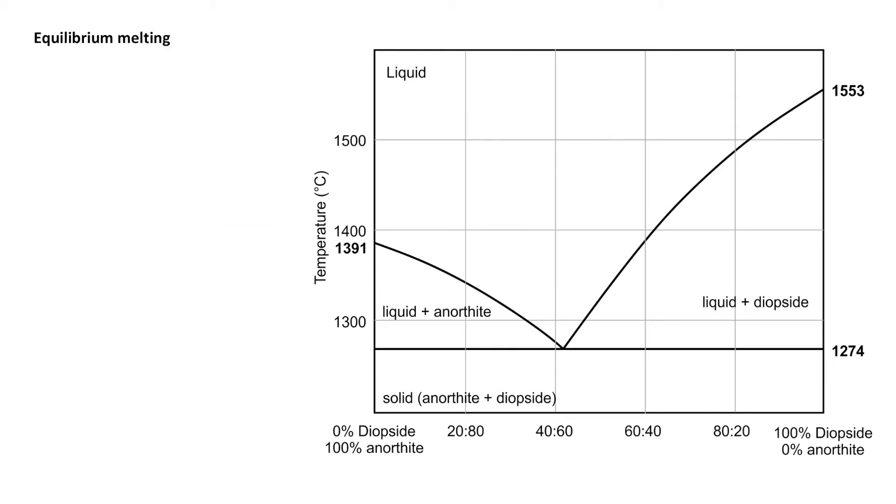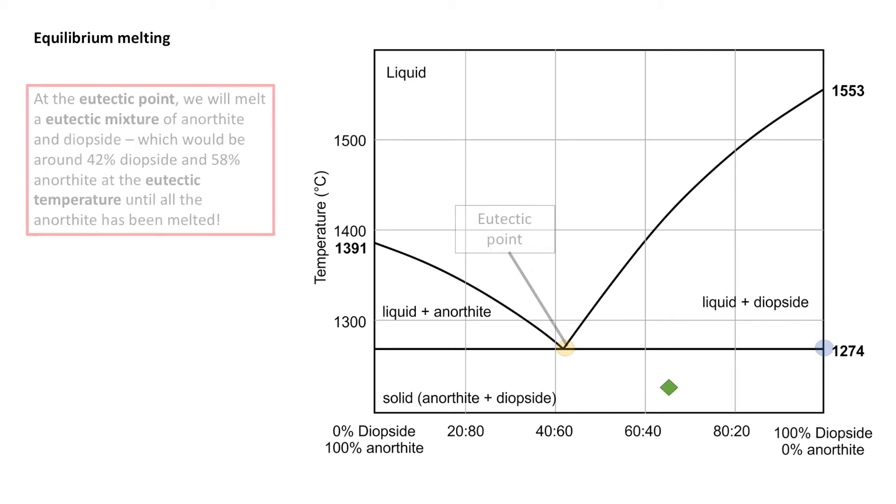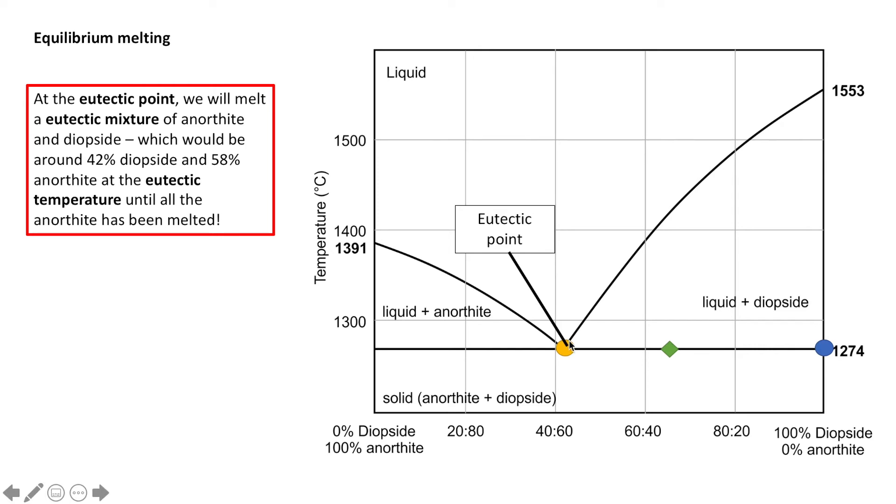During equilibrium melting, it's essentially the exact same in reverse, but it's easier to demonstrate visually. So say we have a rock of sort of this composition. We're going to heat it until it hits the solidus. And when it hits the solidus, it's going to begin to melt. Where it's going to begin to melt is at the eutectic point. So at the eutectic point, we're going to melt a eutectic mixture of anorthite and diopside.